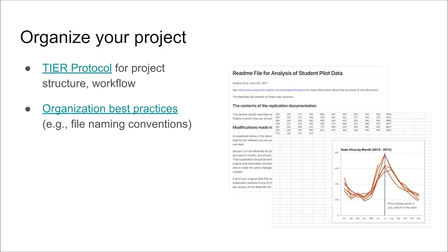The first step, organizing your project, relates to reproducibility because it ensures that anyone trying to reproduce your work, including yourself, can make sense of the project files and steps. Various systems for organizing project files exist, including the TIER protocol, but the most important thing is to be consistent. Additional best practices can offer advice when there are different options for organizing the project.